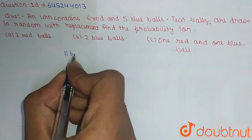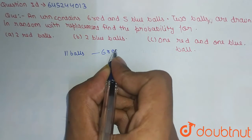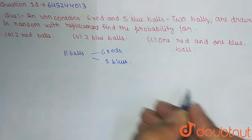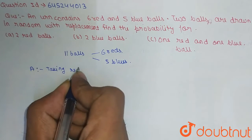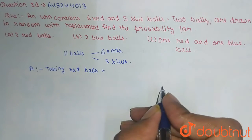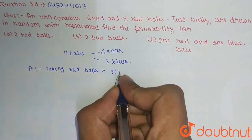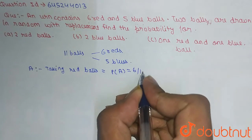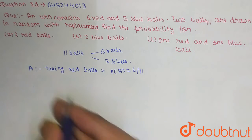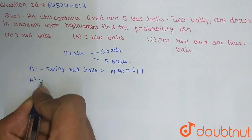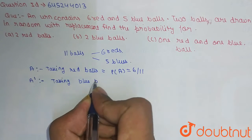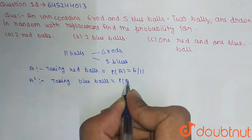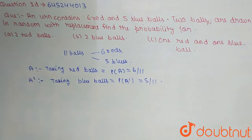As given, the urn contains six red and five blue balls, which means there are a total of eleven balls. Out of eleven balls, six are red and five are blue. Let event A be taking a red ball. The probability of A equals favorable outcomes divided by total outcomes, so P(A) = 6/11. The complement of A, which means taking blue balls, gives P(A complement) = 5/11.